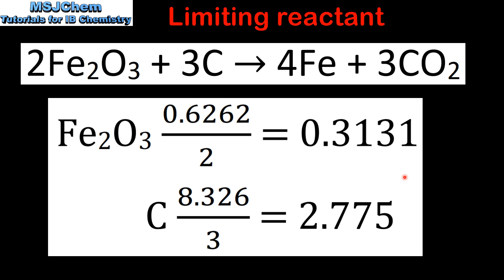The limiting reactant is the reactant that has the lowest value. In this case it's the iron oxide. So iron oxide is the limiting reactant and carbon is the excess reactant.